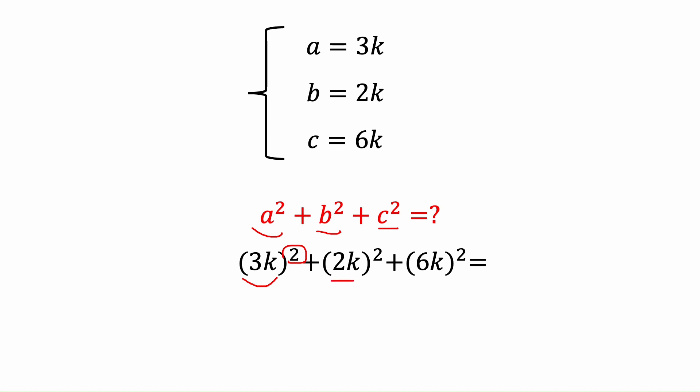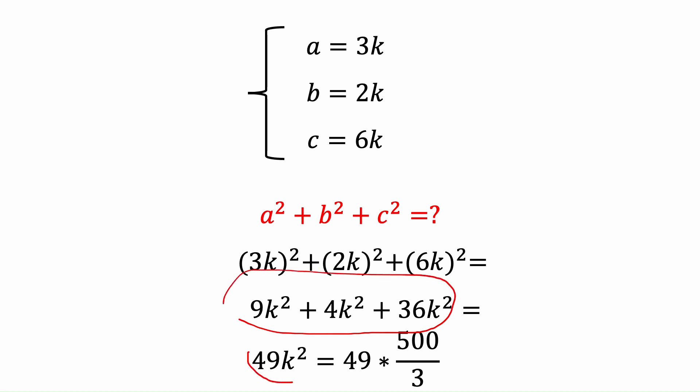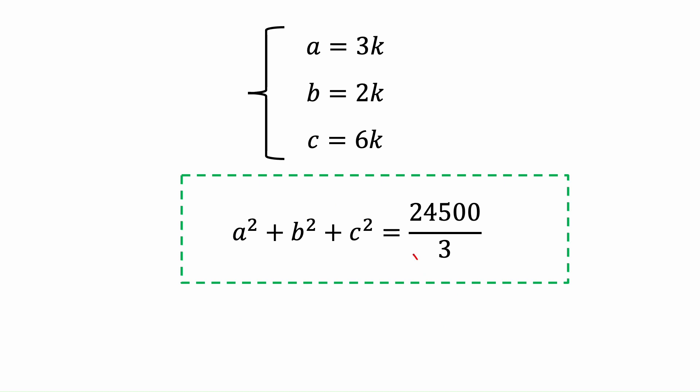Now we want to find this: 9k² + 4k² + 36k². If we sum all of these, we will have 49k². And we had k² equals 500 over 3, and now it's going to be 49 times 500 over 3. So the final answer will be 24,500 over 3.